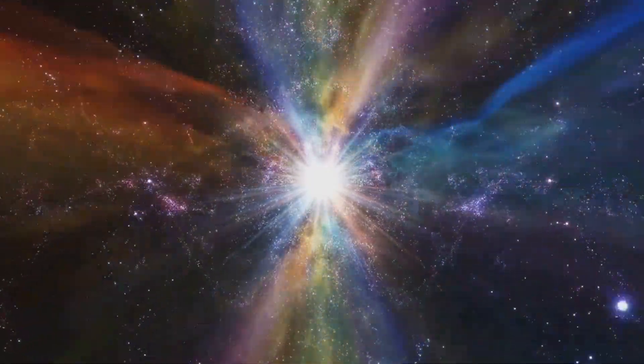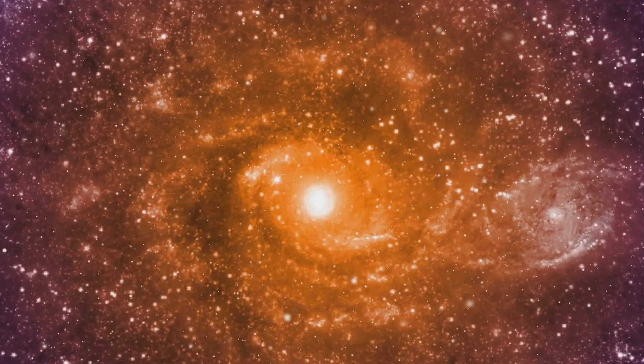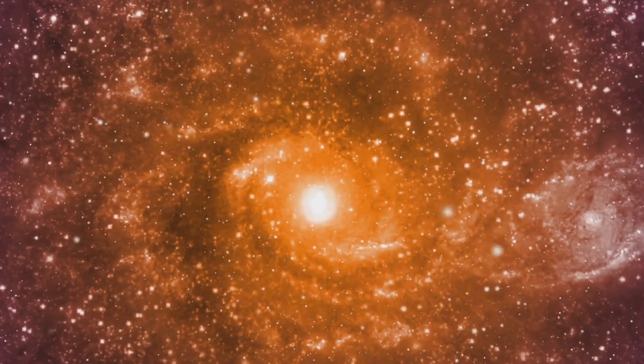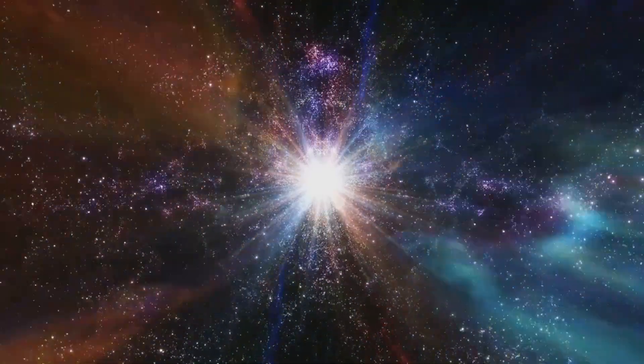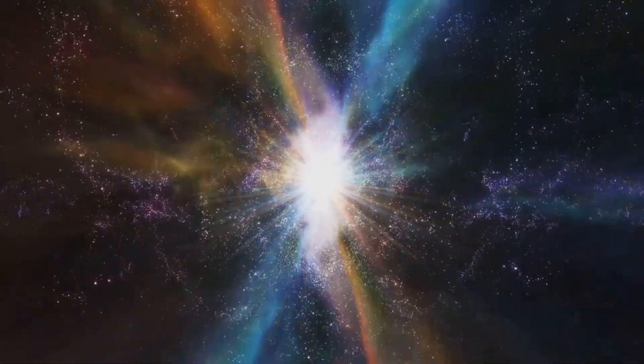For the most massive stars, this phase is a prelude to a spectacular finale, a supernova. Now let's turn our gaze to Betelgeuse, a red supergiant star. Its immense size and age suggest that it's nearing the end of its life cycle. So, if Betelgeuse is nearing the end of its life cycle, does that mean we're about to witness a supernova?